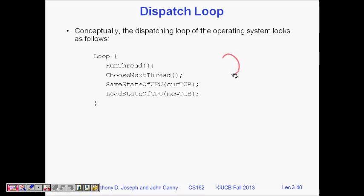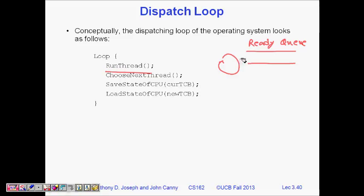In the dispatch loop, there is an infinite loop. There is a function called 'run thread.' There is a ready queue that we studied in the last class — a queue of threads with a front and a rear. So there are threads t1, t2, t3, etc. Whichever thread is at the front, it takes that thread and calls t1.run to start running it.